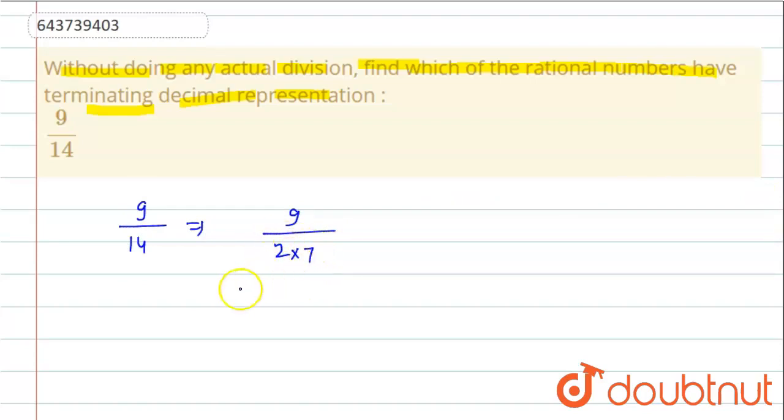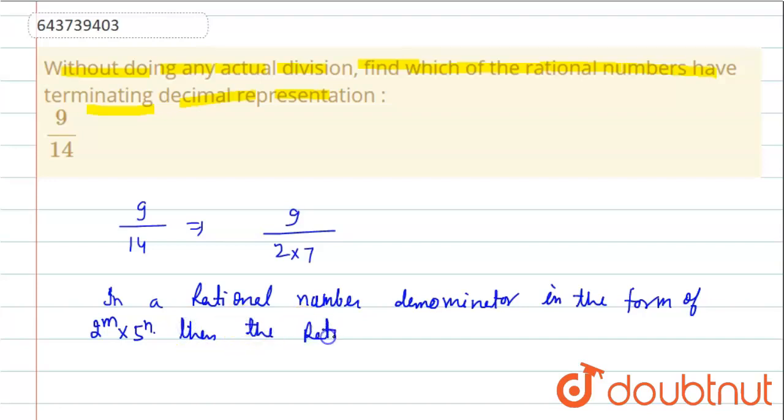If in the denominator, if in a rational number the denominator is in the form of 2 raised to the power m and 5 raised to the power n, then the rational number will be terminating.